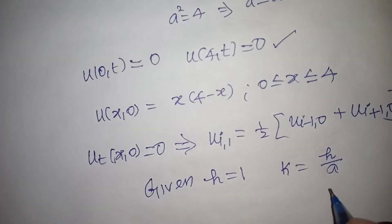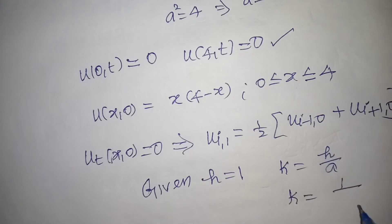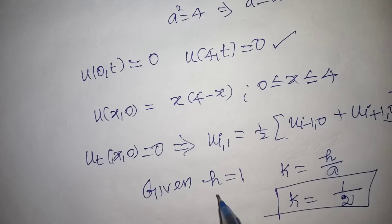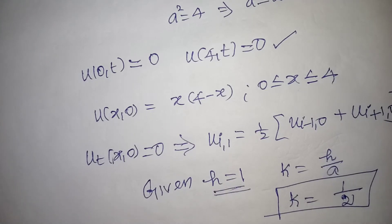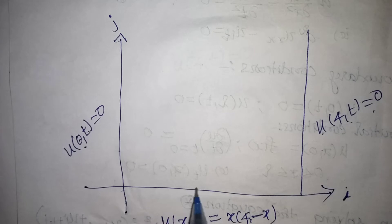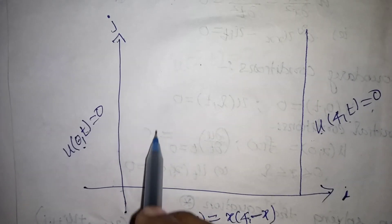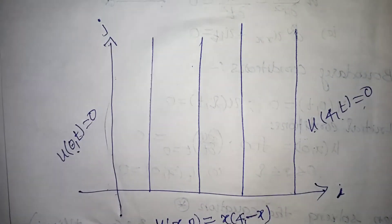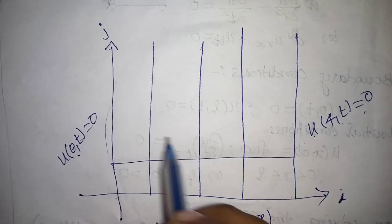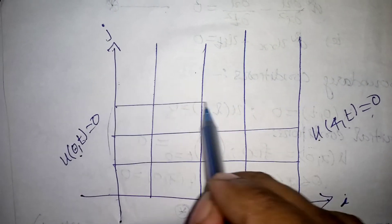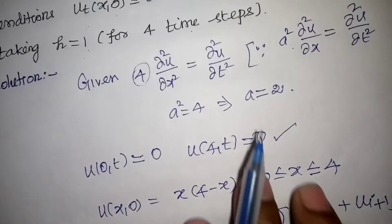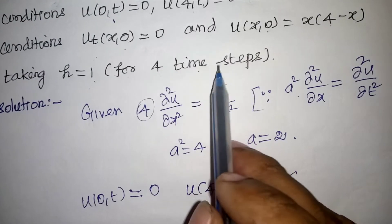From the formula k = h/a, with h = 1 and a = 2, we get k = 1/2. The x-axis spacing is h = 1, so x takes values 0, 1, 2, 3, 4. The time step is k = 1/2, giving time levels 0, 0.5, 1, 1.5, 2 for 4 time steps.